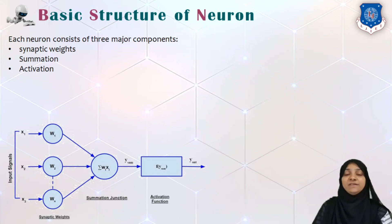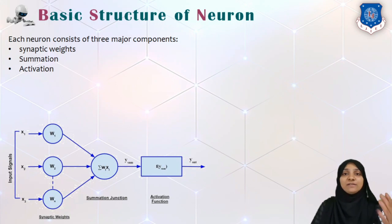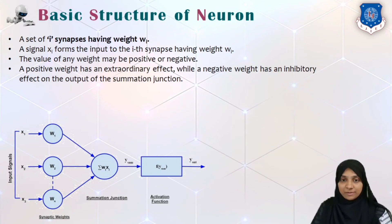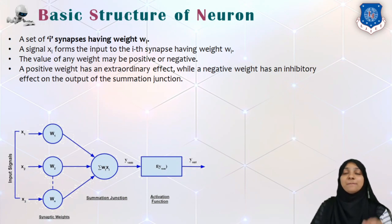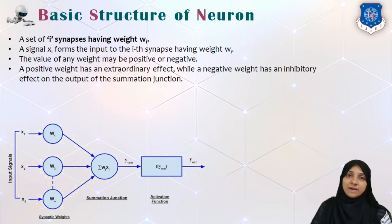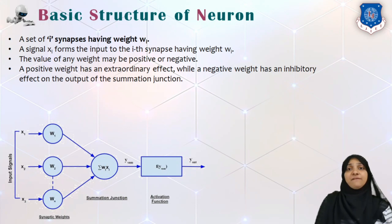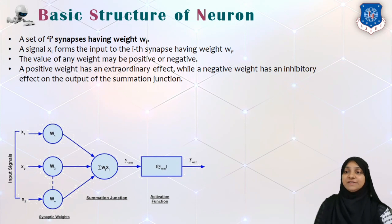Synaptic weights are nothing but weights given to input signals. Input signals are the numerous input values coming into the system. If we have N inputs, we represent each as X1, X2, X3 up to XN. Each input is given a weight, the synaptic weight, represented by Wi. So any signal Xi is assigned a synapse with weight Wi. The weight can be positive or negative, discrete or real, and is adjusted using an iterative method. A positive weight gives an excitatory effect, while a negative synaptic weight gives an inhibitory effect on the output.